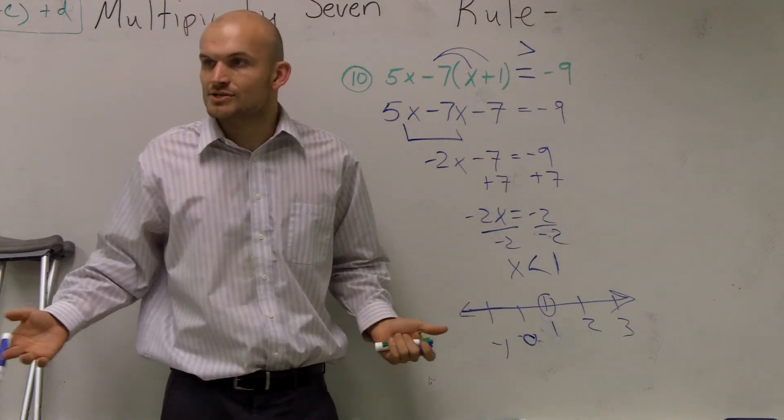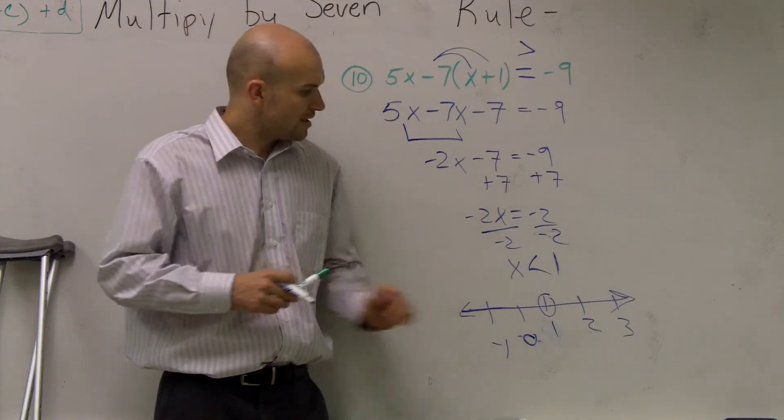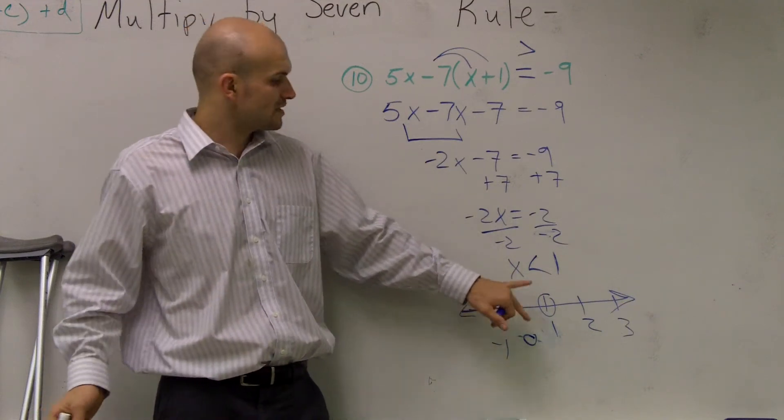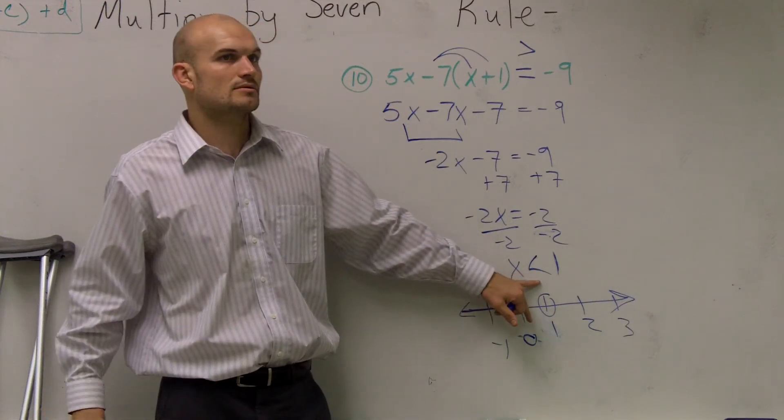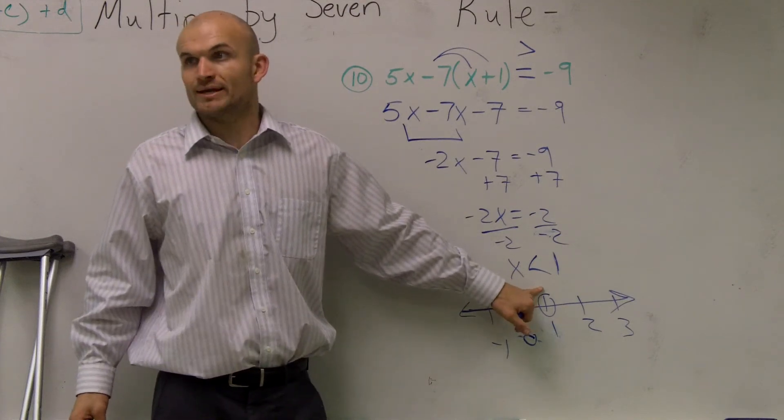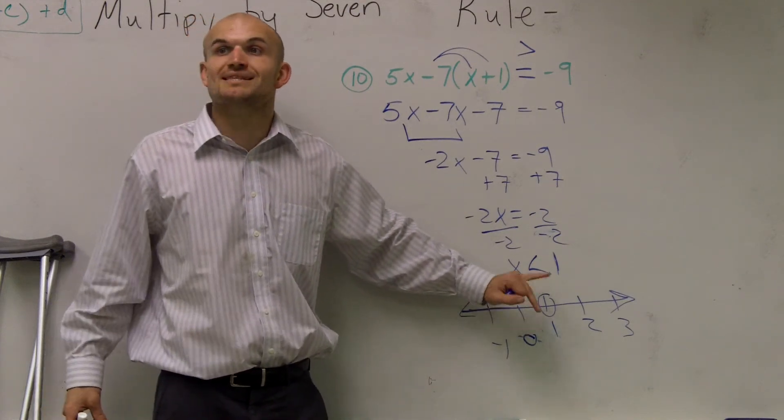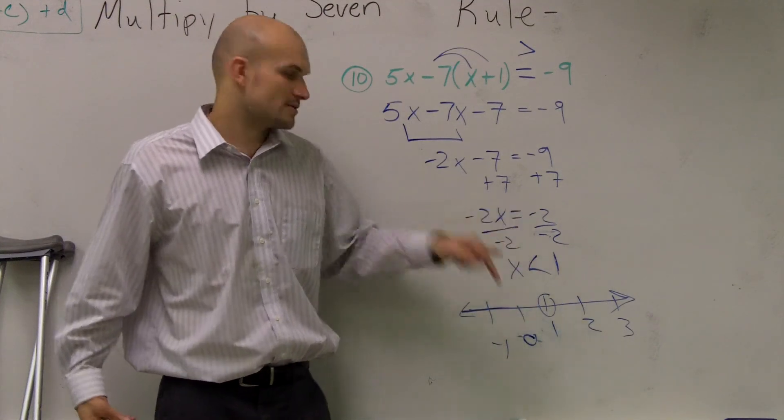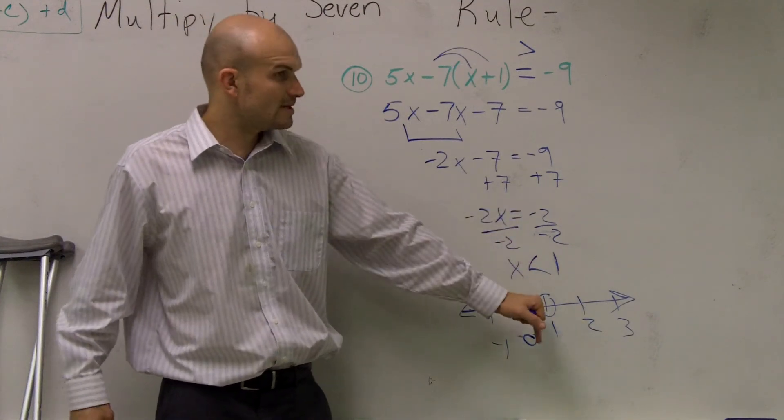Now you guys can do your test points if you want to, right? I already showed you how to do those. However, it's just easier if you guys start noticing, when it's less than, is that open or closed? Open, right? It's only closed when it's less than or equal to or greater than or equal to. So this is just less than, so it's going to be open.